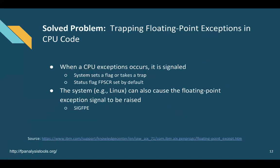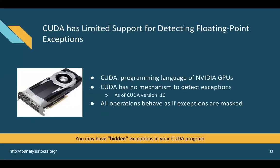Moving to exceptions in GPUs: for CPU code, trapping floating-point exceptions is a solved problem. On a CPU, the system can set a flag, take a trap, or — in a Linux system — trigger the floating-point exception signal, which you can catch with a signal handler. The problem is that GPUs don't support these mechanisms. As of right now, there is no mechanism to detect floating-point exceptions on GPUs. You may have hidden exceptions in your CUDA program — they may occur, but you don't know that they are occurring.